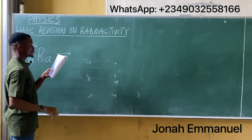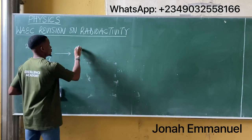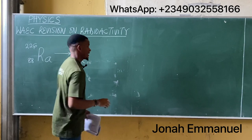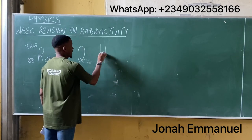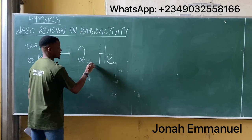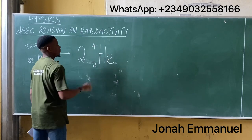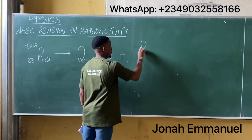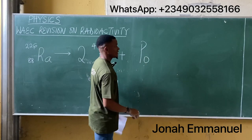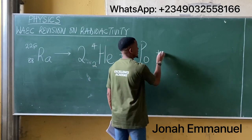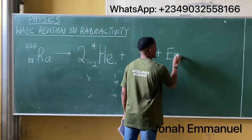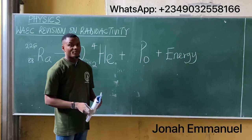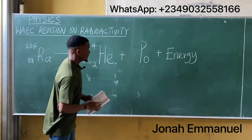Alpha particles are simply helium nuclei with atomic number 2 and mass number 4. We write two helium nuclei, and polonium Po, plus energy — because energy is always given out during radioactive decay. Now let's find the nuclide symbol for polonium, meaning we need to find its atomic number and mass number.